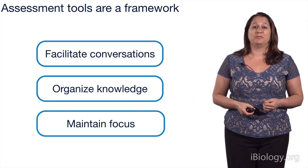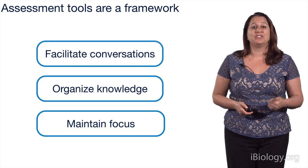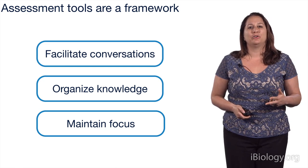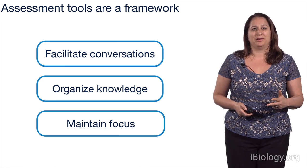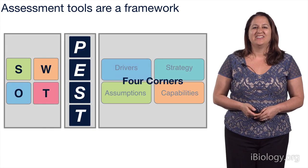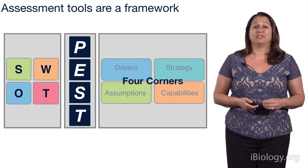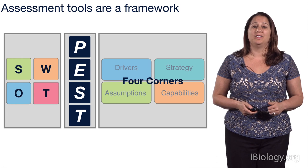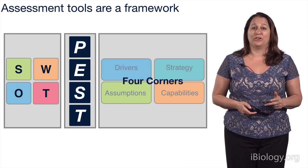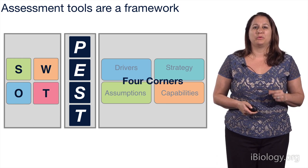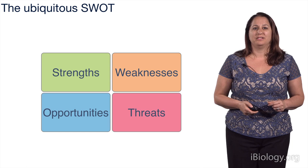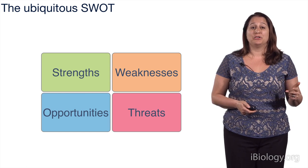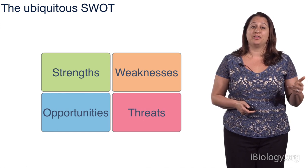Today we're going to talk about three different tools used in environmental assessments: the SWOT, the PEST, and the Four Corners. Let's start with the ubiquitous SWOT. SWOT stands for Strengths, Weaknesses, Opportunities, and Threats. They're arranged in a grid where the columns refer to whether an attribute is positive or negative, and the rows refer to whether it's internal or external.